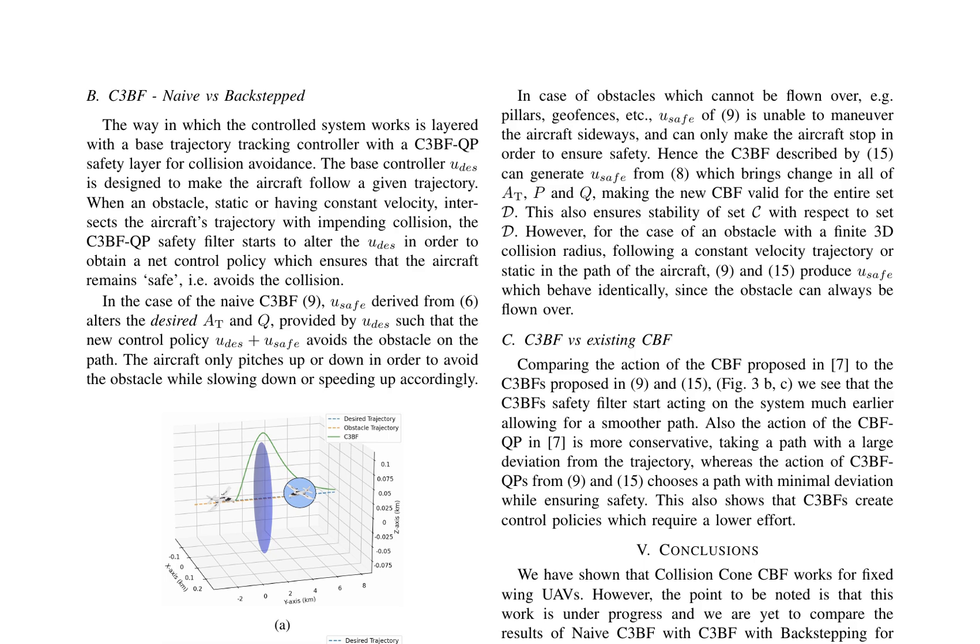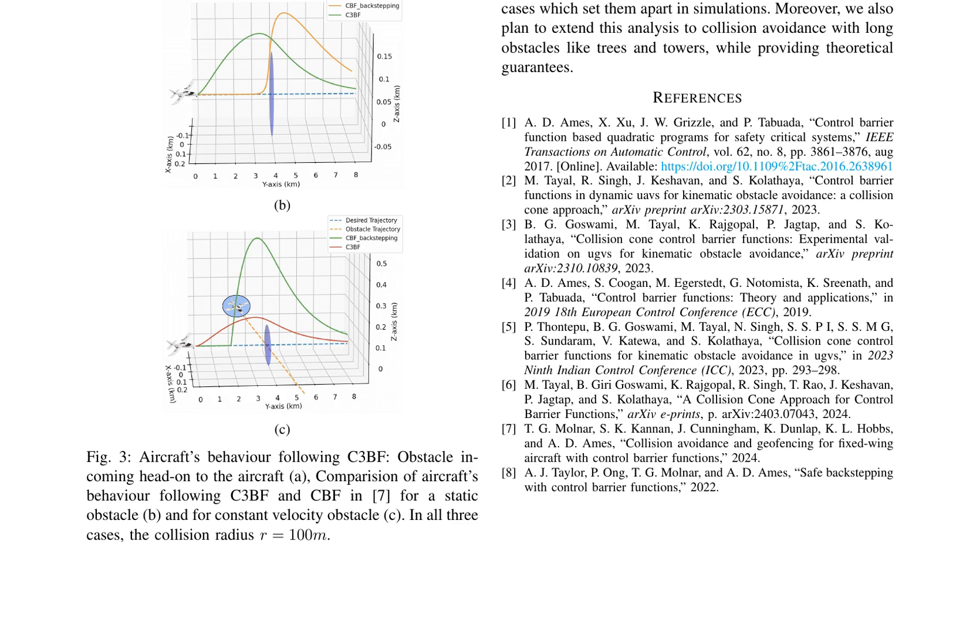The authors proposed two variants of the C3BF: naive C3BF and C3BF with backstepping. The naive C3BF uses a control barrier function that alters the desired airspeed and pitch rate to avoid obstacles, while the C3BF with backstepping applies a more sophisticated control strategy to ensure stability and safety. Comparative simulations demonstrate that both variants of the C3BF outperform the existing CBF in terms of smoother paths and lower control efforts. The C3BFs initiate safety measures earlier and choose paths with minimal deviation from the trajectory, ensuring safety without overly conservative maneuvers. The authors also plan to extend this analysis to include collision avoidance with long obstacles like trees and towers, providing theoretical guarantees for these scenarios. This work is ongoing, and future comparisons between the naive C3BF and the C3BF with backstepping are anticipated to provide further insights into their relative performance.